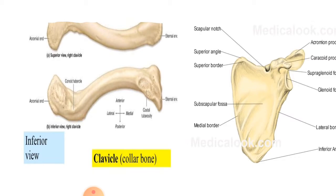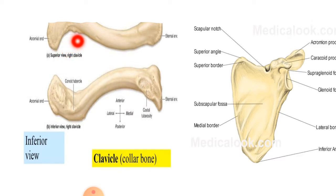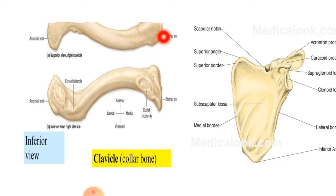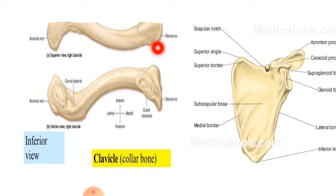The first bone we are going to talk about is the clavicle — this is the right clavicle bone. Its shape is roughly S-shaped, so we can say that the clavicle is a roughly S-shaped bone. It has a sternal end that articulates with the manubrium of the sternum, which we already discussed in our previous lecture when we covered the ribcage. This sternal end joins with the manubrium of the sternum to form the sternoclavicular joint.